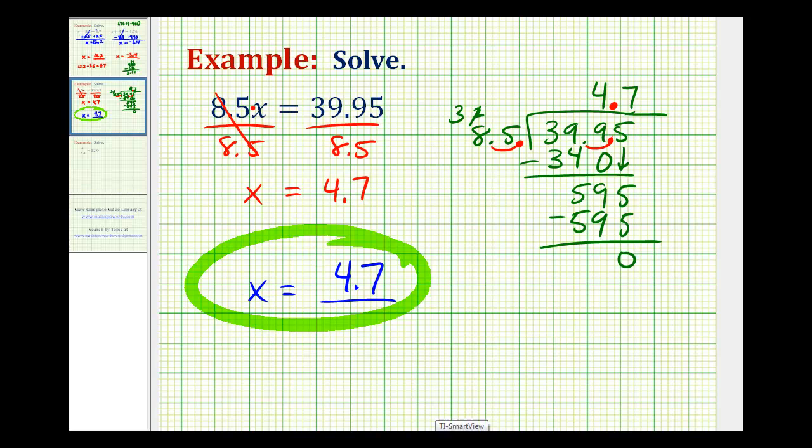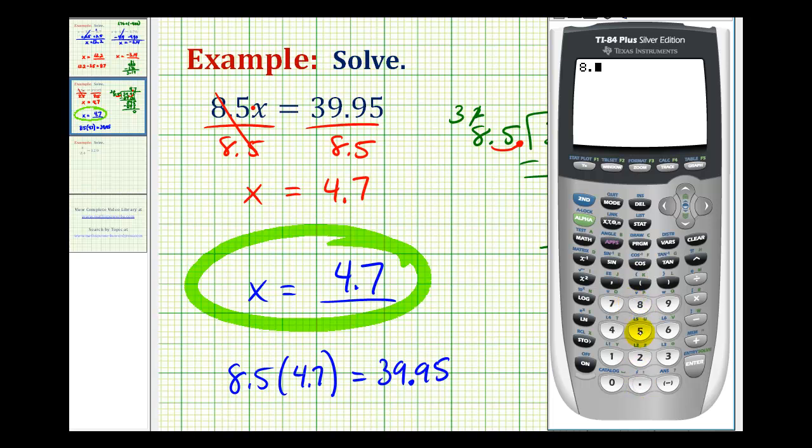Let's go ahead and check this. If it's the solution, then 8.5 times 4.7 must equal 39.95. And it checks.